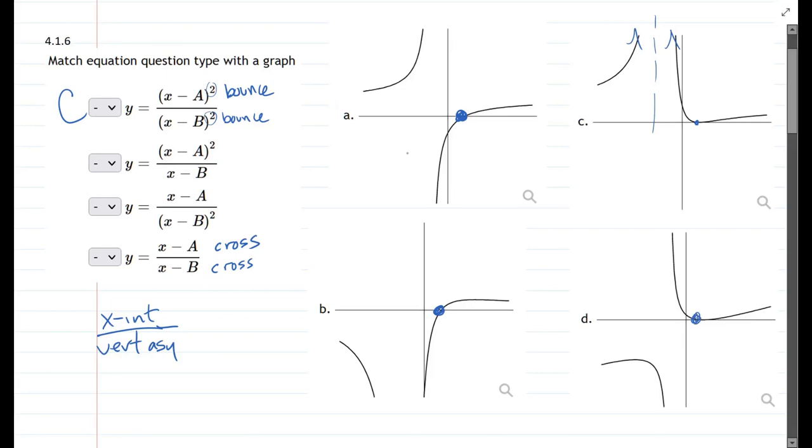Graph D, however, bounces on the x-intercept. So graph D is not going to be this one.